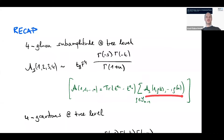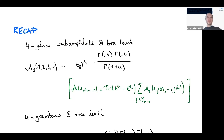You factor out the color structure and what you're left with is called the subamplitude, given by the remaining terms without color. Since it's cyclic, you can fix one point and symmetrize over the others to get the full structure. This is the first consideration for thinking about the open string amplitude.